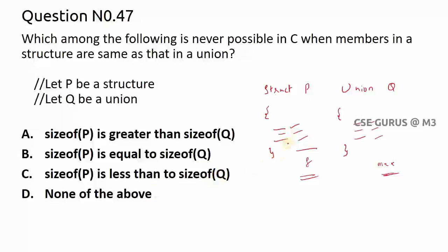So sizeof P is less than sizeof Q. When it will be less than Q? Never it will become. Why? Because here, even if you have only single, it will be equal. So here the memory, if you consider for structure and union, the memory in the union can never be greater than to the structure when it comes to the same members.